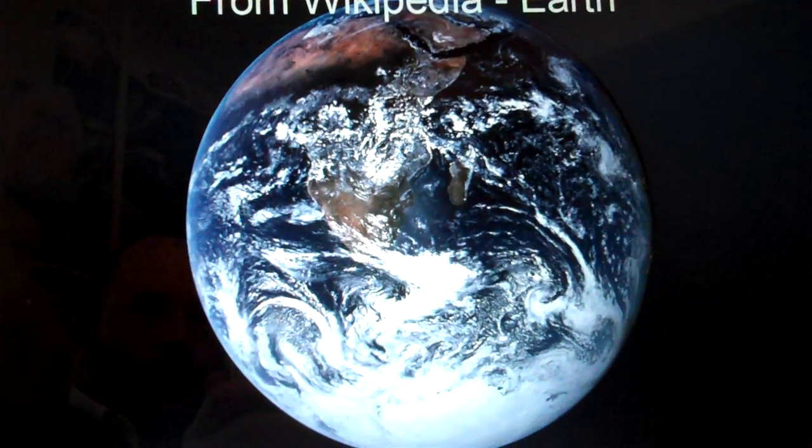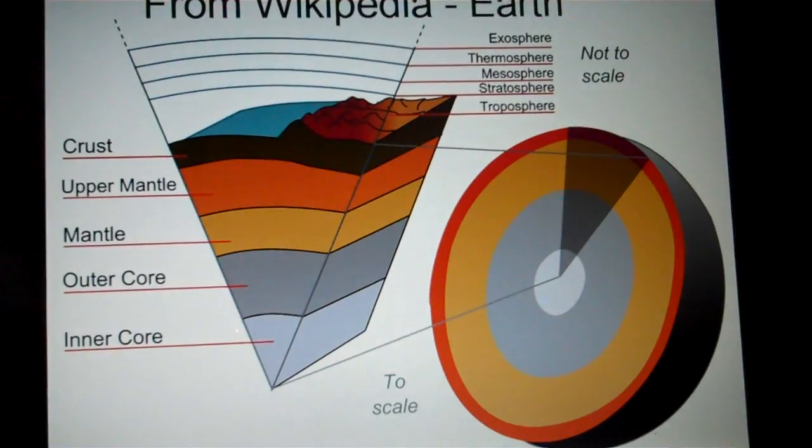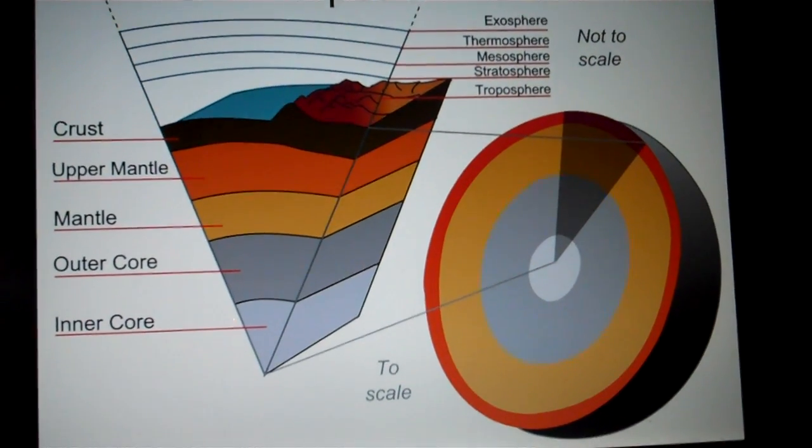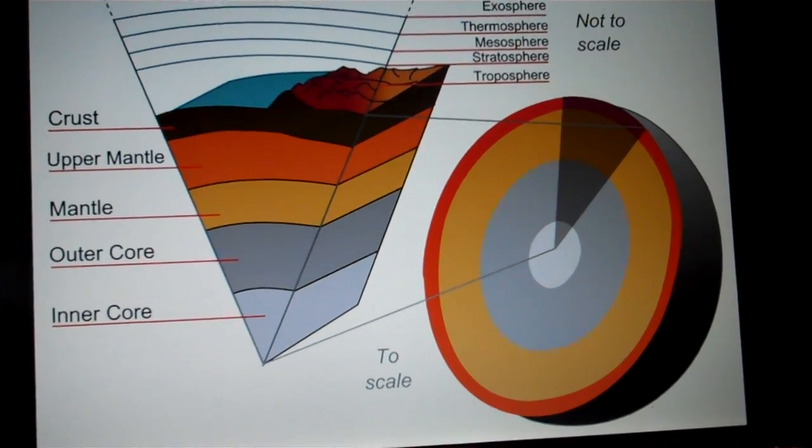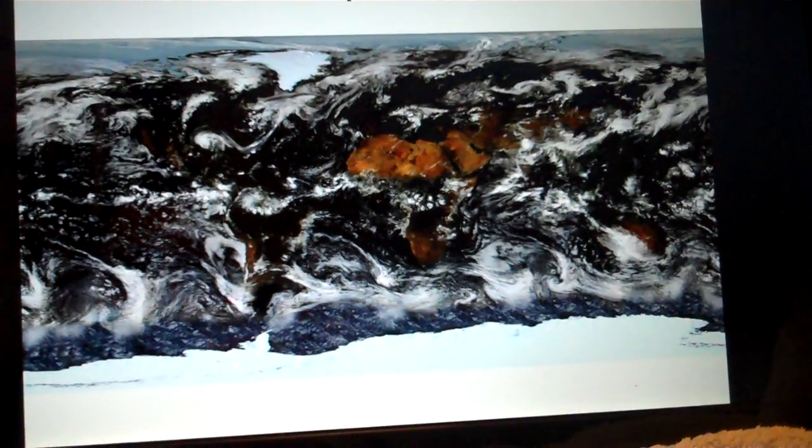If we want tectonic plates, land mass to move on a sphere, if we want to show how it is that Mother Earth has these layers—the iron core, molten rock, the crust. But first,